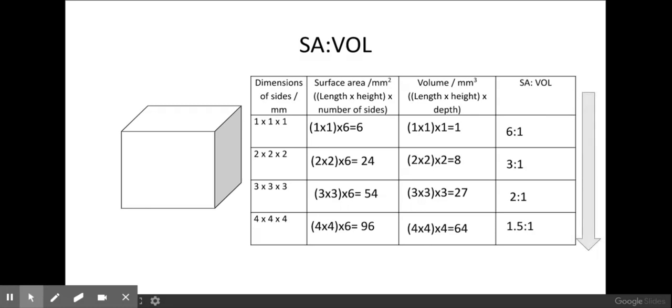As you can see in this pattern, as the size of my cube increases the surface area to volume ratio actually decreases, and this is really important. You need to be able to apply this to organisms. The larger the organism such as a multicellular human, the smaller the surface area to volume ratio, whereas something like a bacteria or an amoeba that's single-celled would actually have a very high surface area to volume ratio.